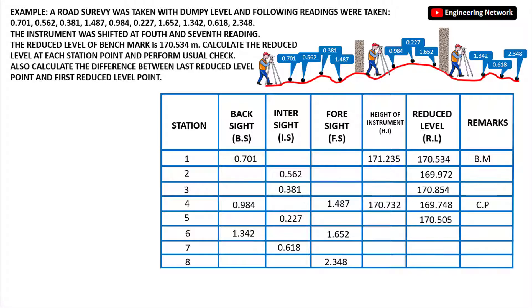Similarly, I will calculate the reduced levels at the remaining station points. This completes the line of collimation — or height of instrument — table. If you work as a surveyor, you will encounter this type of table and be asked to fill it out on site.